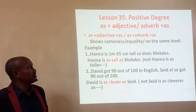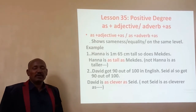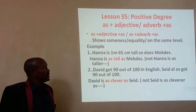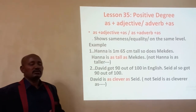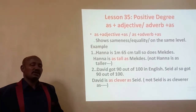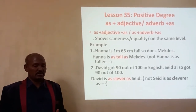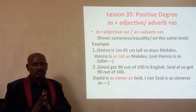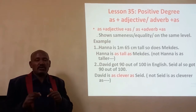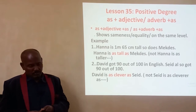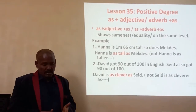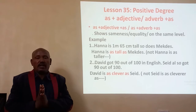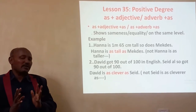Today's lesson is about lesson 35, which is a new topic: positive degree. When we say positive degree, it talks about things which are similar, or it talks about sameness — things which are found at the same level or at the same ground. Positive degree means things which are the same, sameness, or equality. If we say positive degree, no one is better than the other or no one is lesser than the other. Both two things are the same.